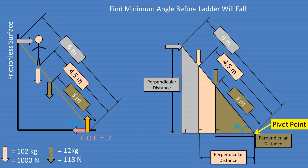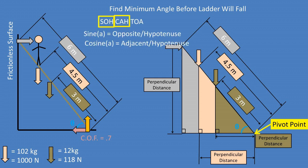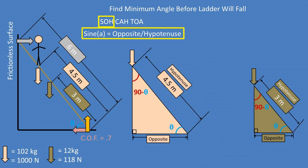Now back to the ladder problem. We need to find the perpendicular distance for the three forces acting about the pivot point at the base of the ladder, so we must recall some trigonometry — specifically SOHCAHTOA. The SOH means sine of the angle equals opposite over hypotenuse; the CAH means cosine equals adjacent over hypotenuse. Rearranging these formulas, we can solve for the unknown distances. We will first find the perpendicular distance to the forces from the person on the ladder and the center of mass of the ladder by solving the right triangle.